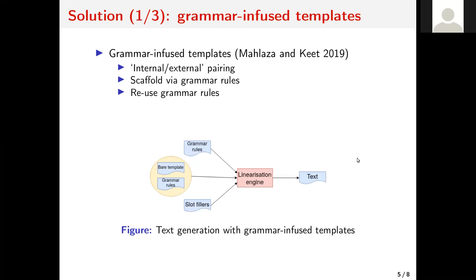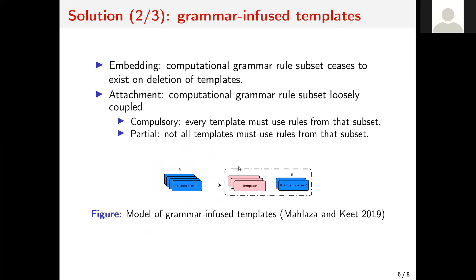The solution I am proposing for solving this problem is what I call GrammarFuse templates. This idea was first published last year. Basically, the idea of GrammarFuse templates is that you pair templates and grammar rules using an internal and external pairing. The point is that you want to be able to scale templates with grammar rules, but also reuse the grammar rules. The model relies on two main relationships: the first one is called embedding, and the second one is attachment.